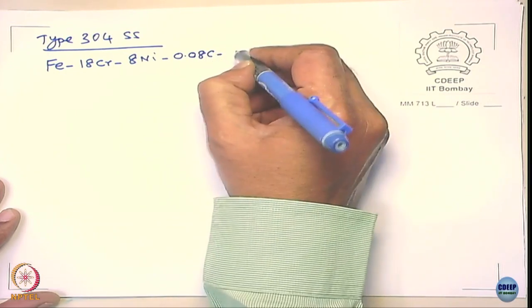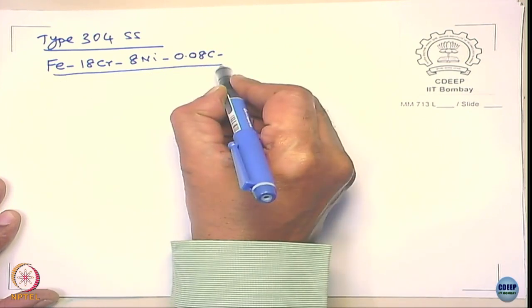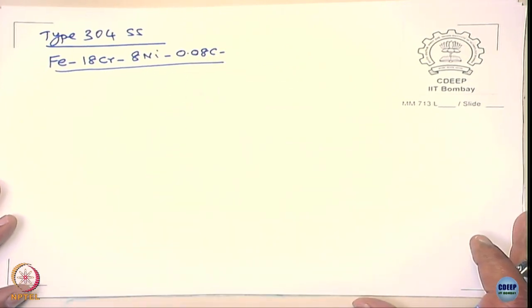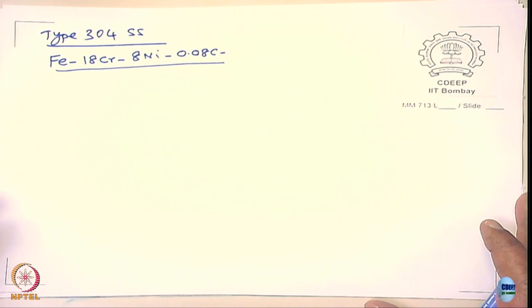The 18% chromium is beyond the minimum required level to passivate, and nickel is required to make the phase austenite at ambient temperature — otherwise austenite only appears at high temperatures. In those days, removing carbon was very difficult. Only after the AOD (Argon Oxygen Decarburization) process was introduced were they able to successfully remove carbon to a large extent. Before that, nuclear reactors used either 304 as-is or stabilized grade stainless steels.